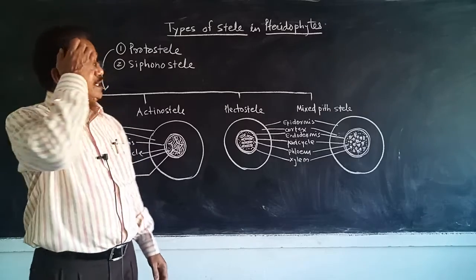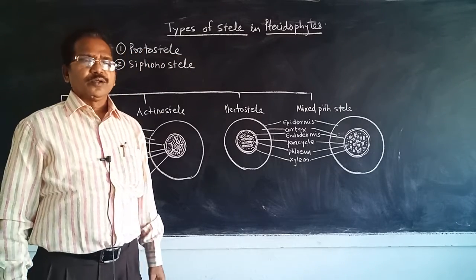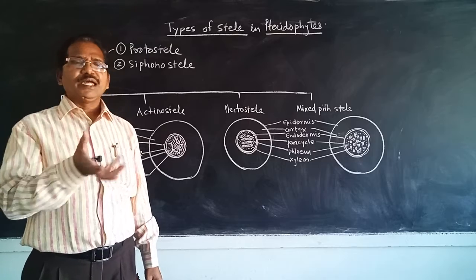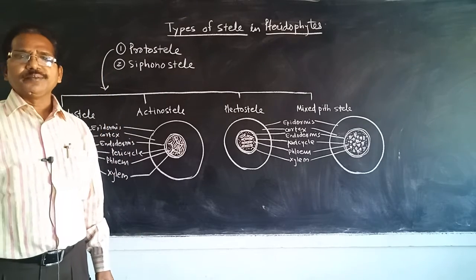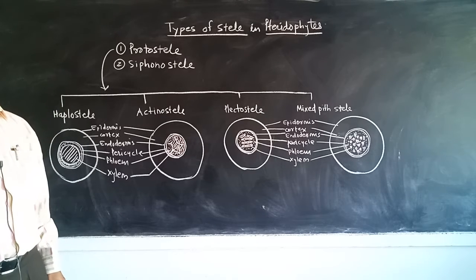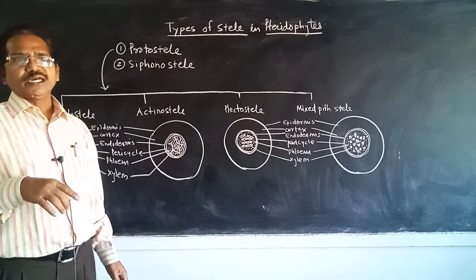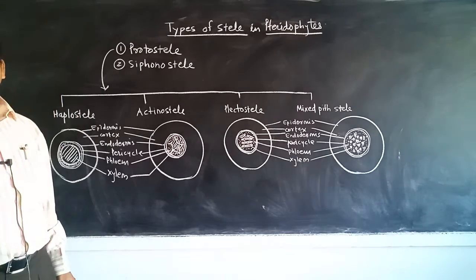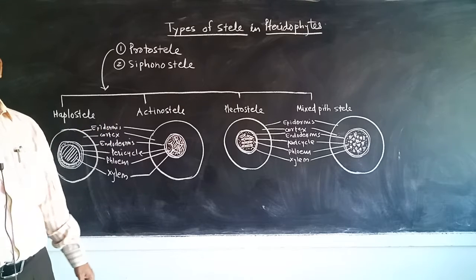What is protostele? Protostele is when the whole xylem element remains surrounded by the phloem element, and these phloem get surrounded by pericycle, then endodermis, then cortex, and the outermost layer is the epidermis.